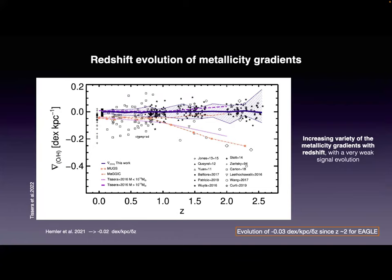Showing the median metallicity gradients as a function of redshift for the EAGLE simulation (the blue line), it seems like a constant value because the evolution is really very small — about −0.03 dex per kiloparsec per unit redshift. This is more or less what the IllustrisTNG simulation also gets. Both simulations reproduce a similar level of evolution. The compiled observations show large dispersion and no clear trend, except a slight tendency to have more positive metallicity gradients at higher redshift.